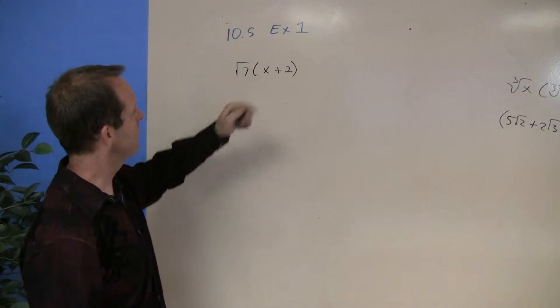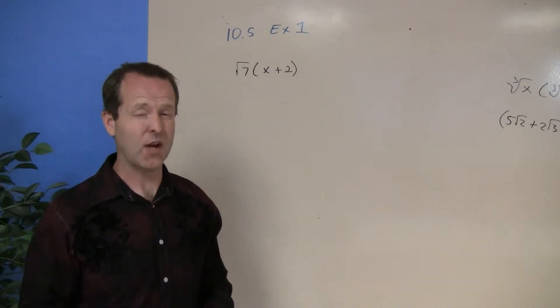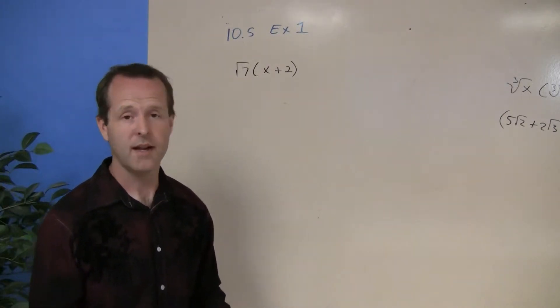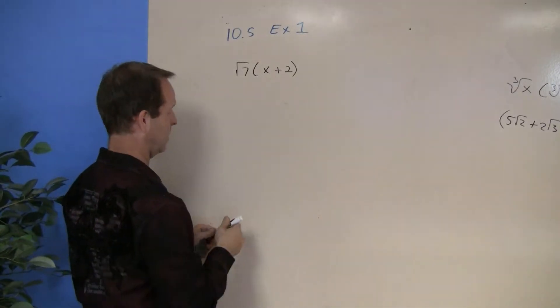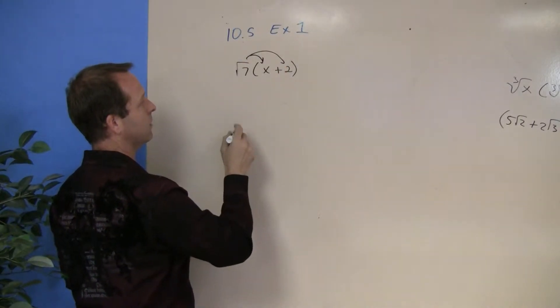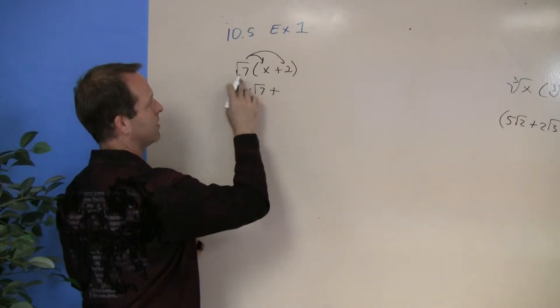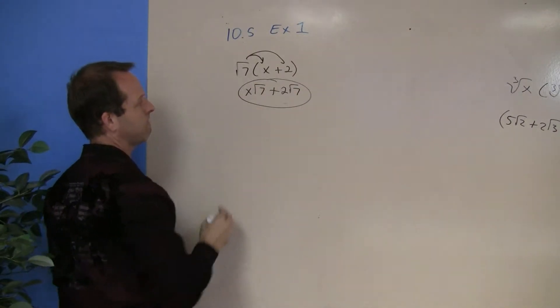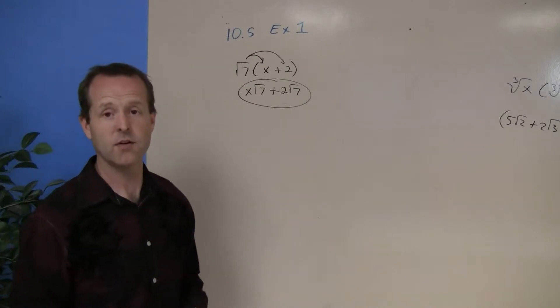The square root of 7 times x plus 2. Some of you might be saying, I don't know how to do it, or it could look like maybe a distribution problem that we've seen before. And that's actually what we have. Root 7 times x plus 2. I'm going to distribute that root 7 to the x and then to the 2. So root 7 times x is x root 7 plus root 7 times 2 is 2 root 7. And so there I was able to go ahead and distribute that on out and multiply it.